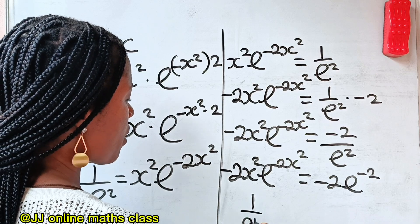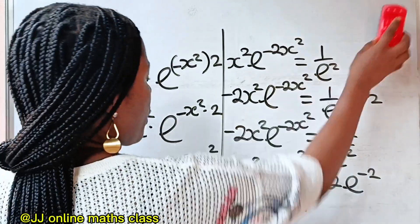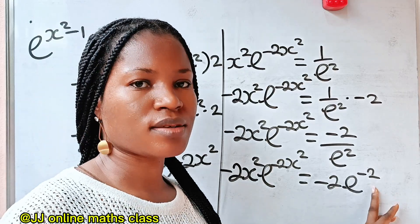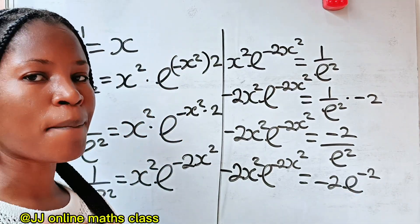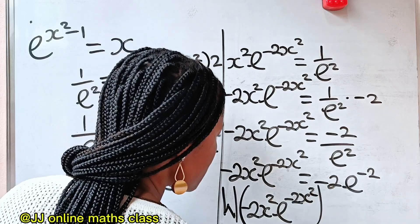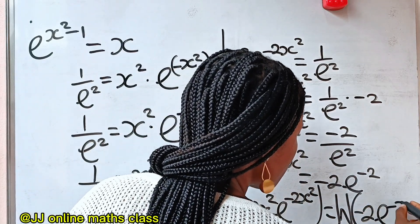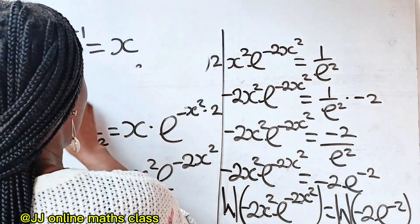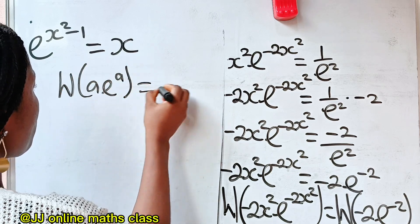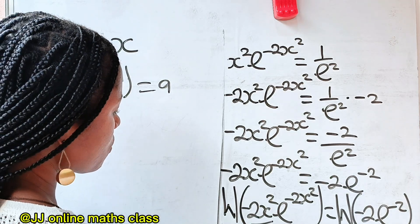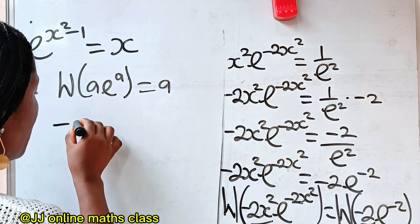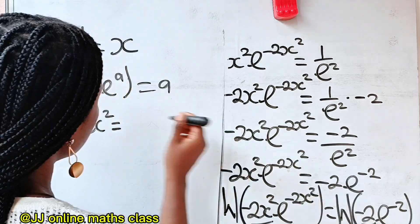Because 1 over a to the power of n equals a to the power of minus n, we can write the right-hand side as minus 2 times e to the power of minus 2. You can see that the coefficient is now the same as the power, so this is the right time to introduce the Lambert W function. Applying the Lambert W function to both sides: W of minus 2x squared times e to the power of minus 2x squared equals W of minus 2 times e to the power of minus 2. This gives us minus 2x squared on the left and minus 2 on the right.